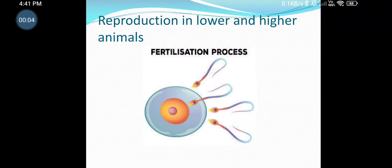Welcome back students. We are going to continue with the lesson on reproduction in lower and higher animals. We had studied different topics of reproduction, and lastly we studied about gametogenesis or formation of gametes, including spermatogenesis, oogenesis, and structure of sperm. Now we are going to study about fertilization.